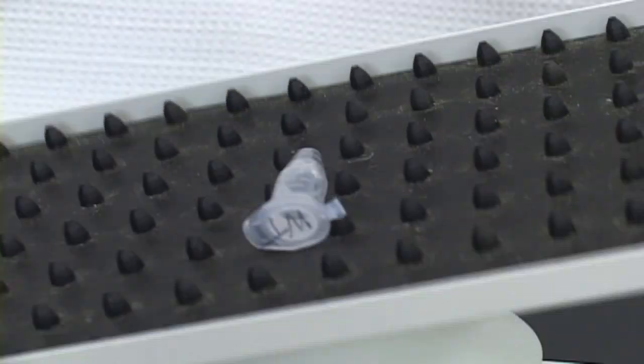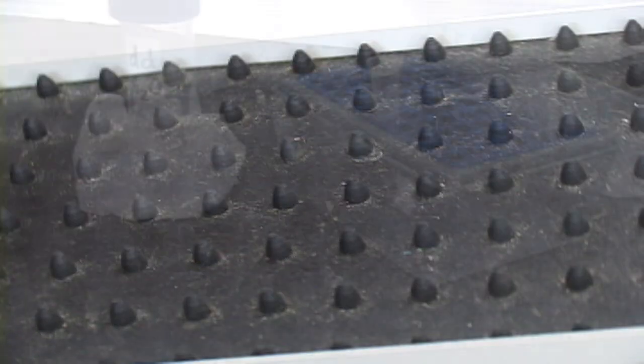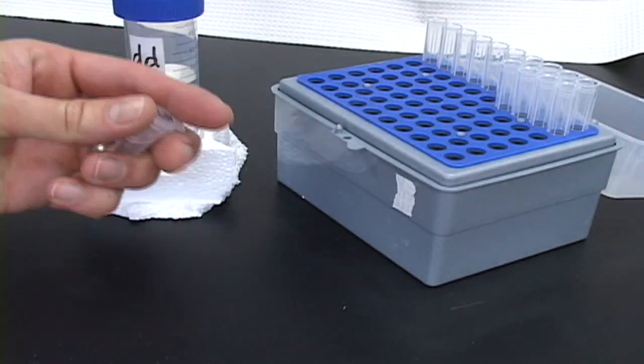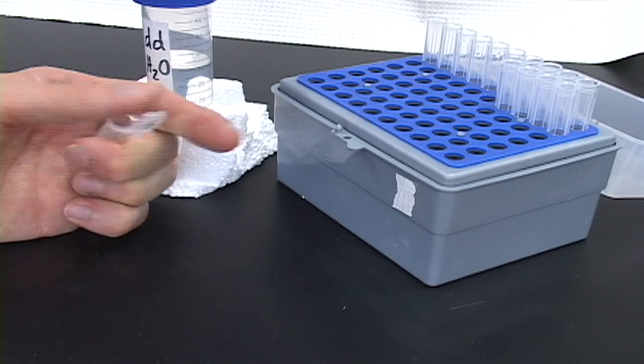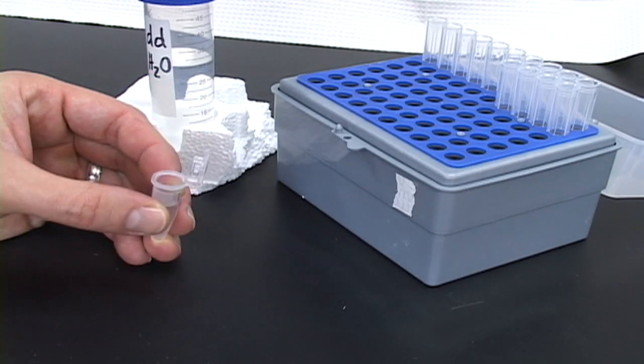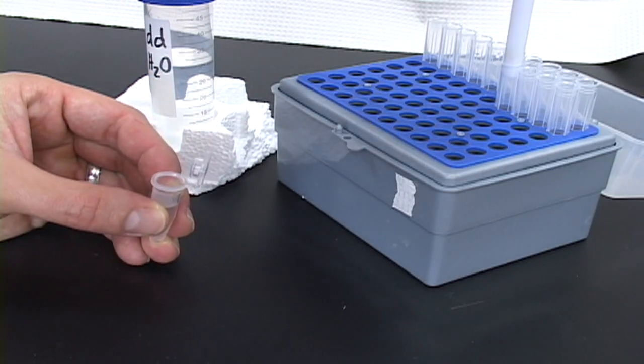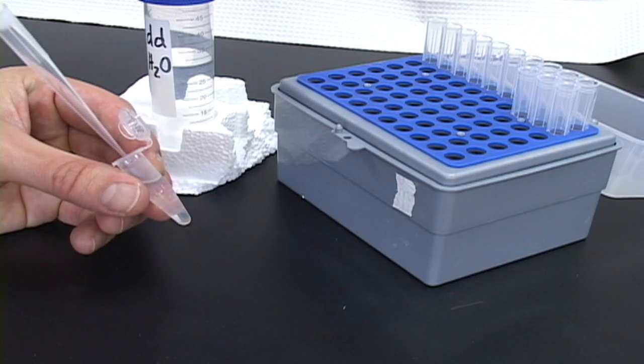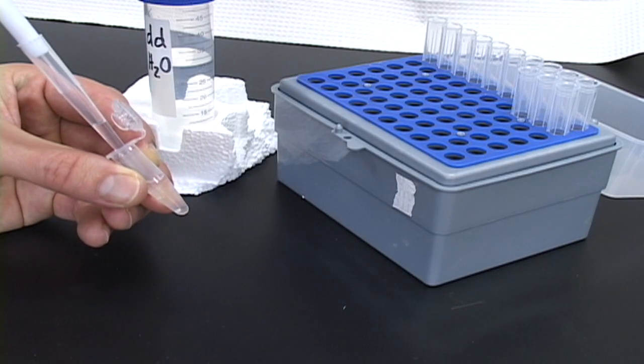After washing, the seeds must be rinsed several times to remove any traces of the bleach. This is done by rinsing with four volumes of sterile water. First, remove the bleach solution from the tube using the same careful method as with the ethanol removal, making sure not to draw up any seeds.